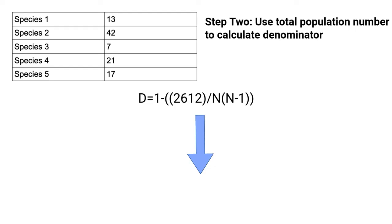Next, you need to find the value of the denominator. To do this, you need to take the total population number and input it into capital N. A quick side note, I've taken the population values that we calculated in the previous step and added them together to find a total of 2,612.